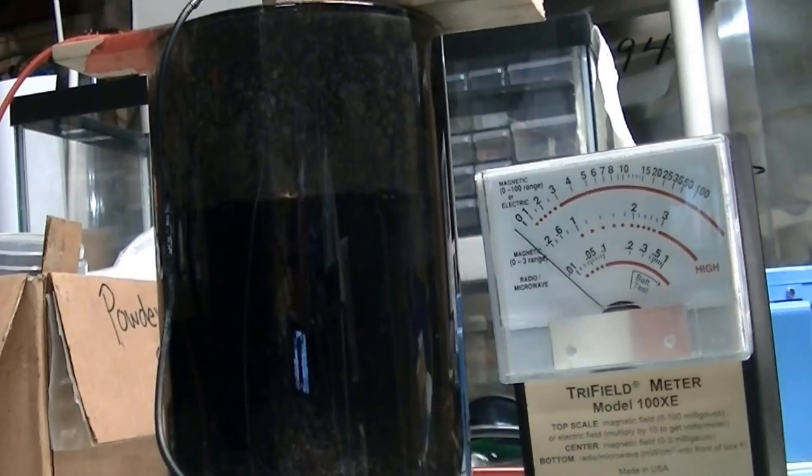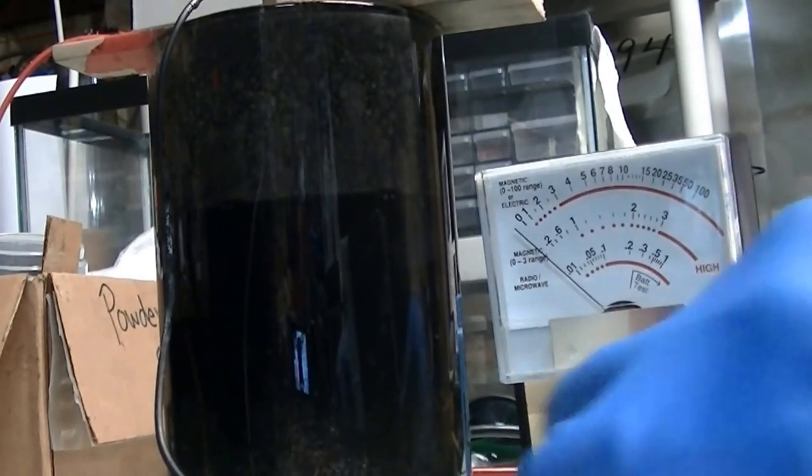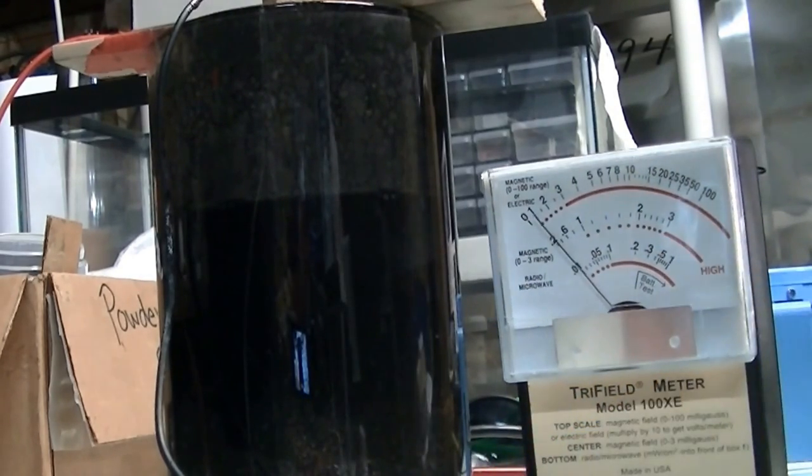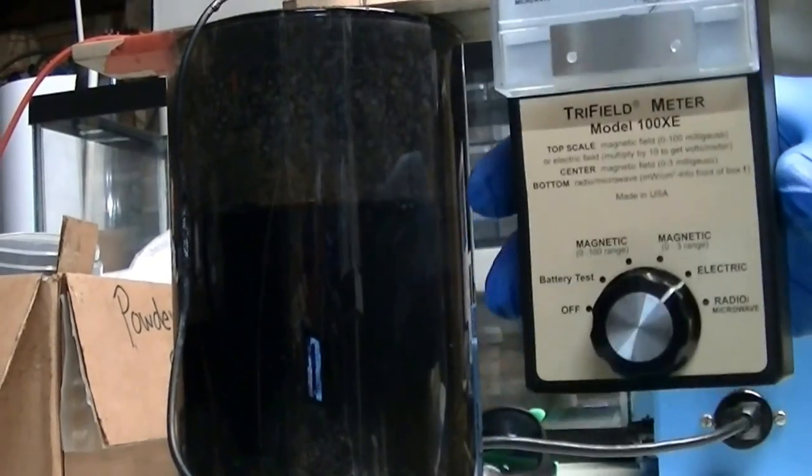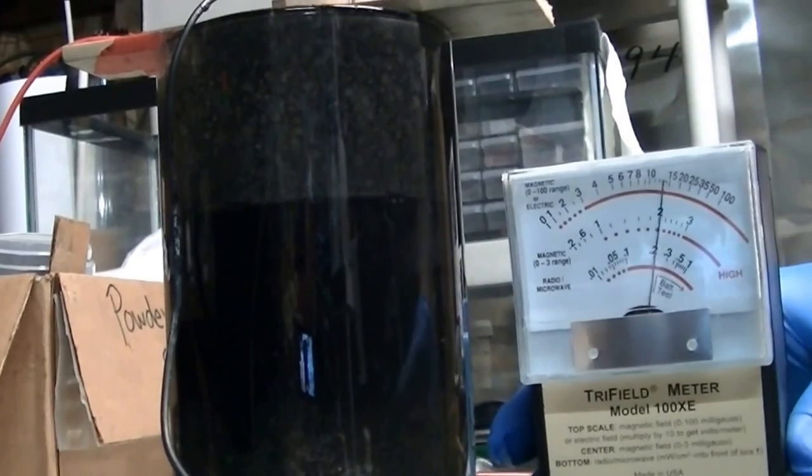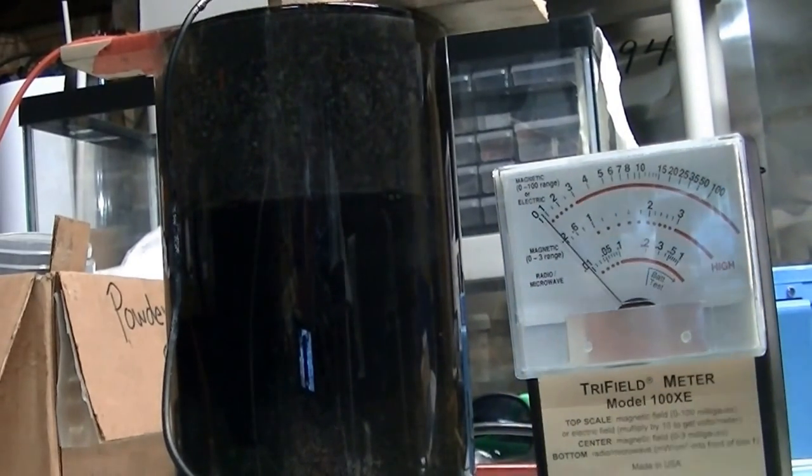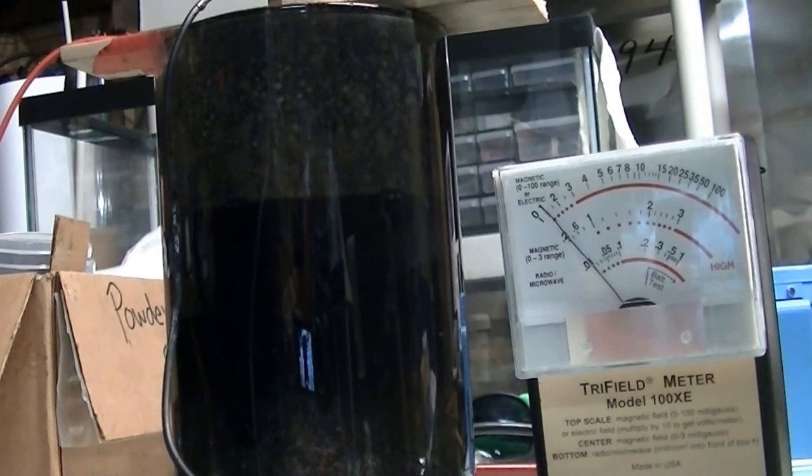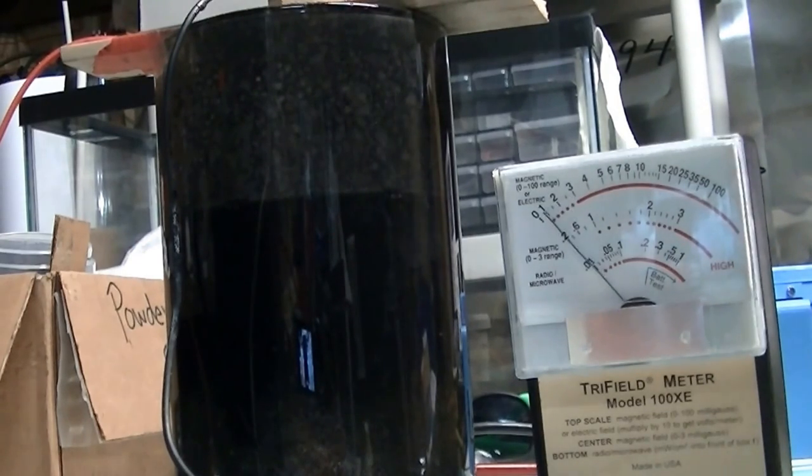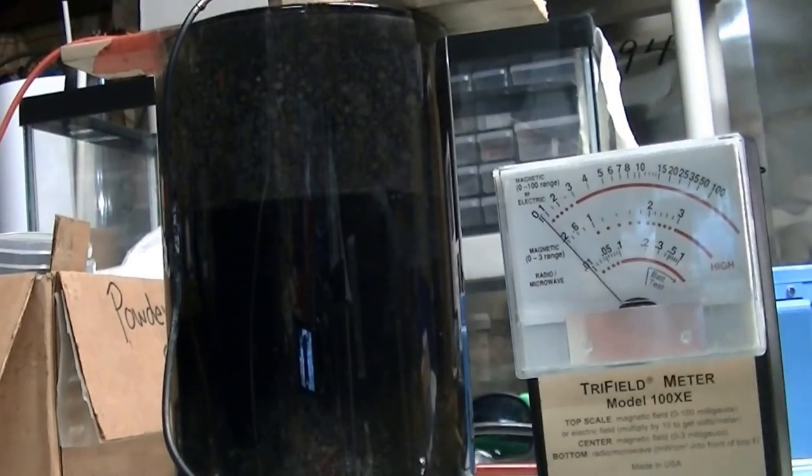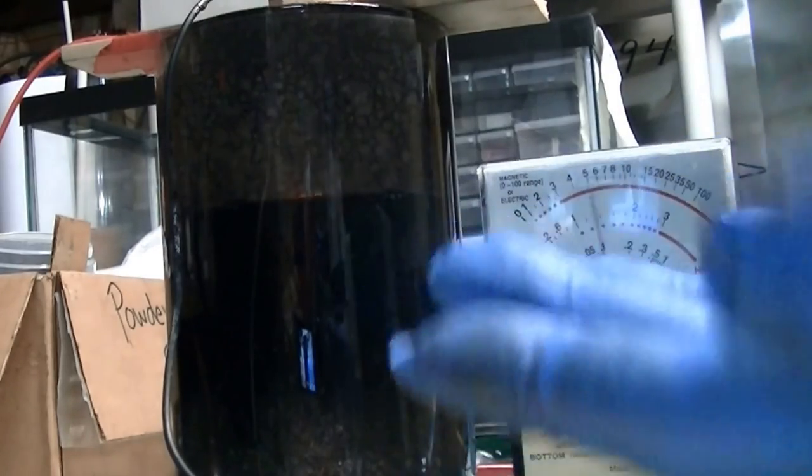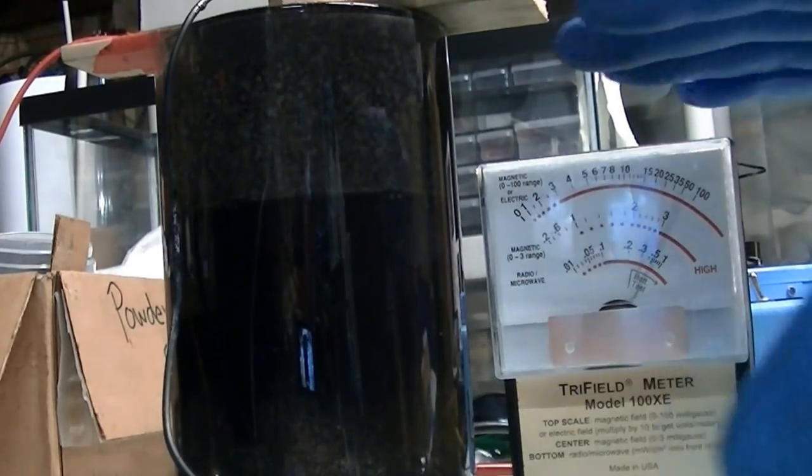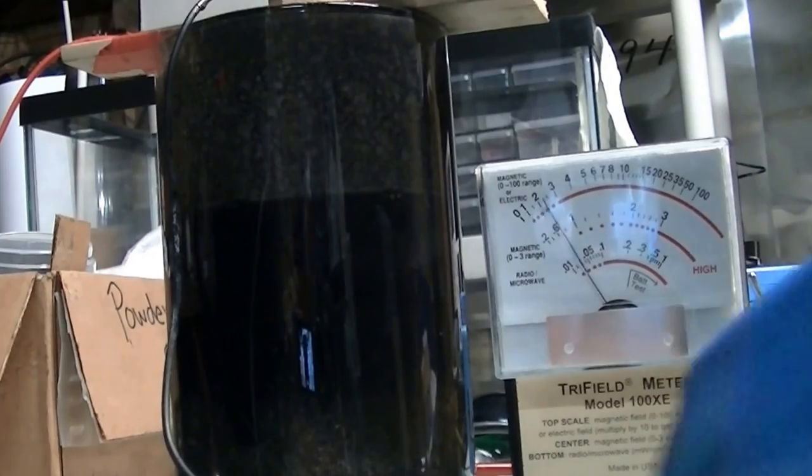This is testing the microwave radiation with a tri-field meter. There doesn't seem to be much microwave radiation. When I switch it to the electrical field, there's a small electrical field. Then when I touch it, because of my grounding effects, I can pass all of the electromagnetic radiation that's all around my bench from the auto transformer and the cell itself.